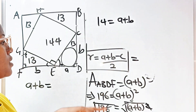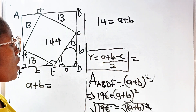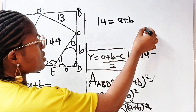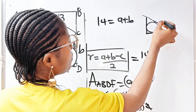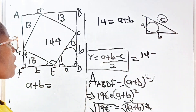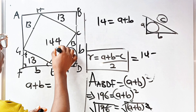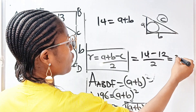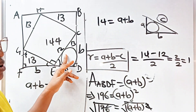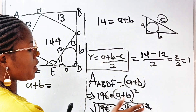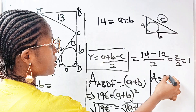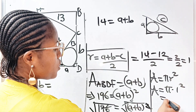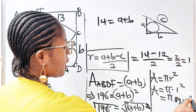Remember that the radius is A plus B minus C divided by 2. A plus B is already 14, minus C. Remember that our C is the hypotenuse, and we already got the hypotenuse as the length of the inner square, which is 12. So the radius is 14 minus 12 divided by 2, which is 2 divided by 2, which equals 1. The radius of this circle is 1. Now, the area of this circle is pi R squared, so the area is pi times 1 squared, which means the area is pi square units.